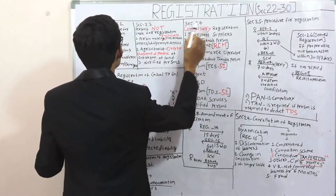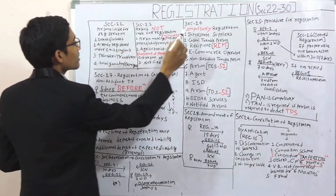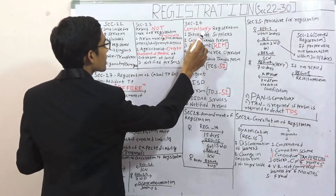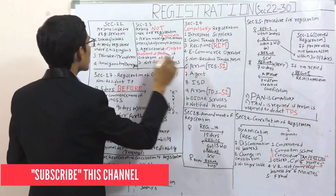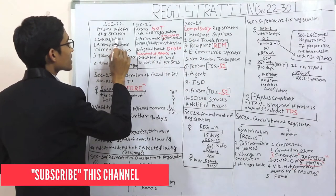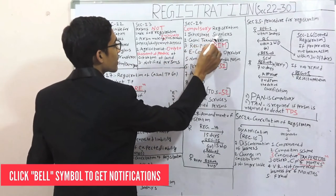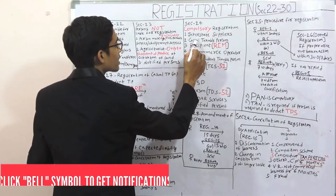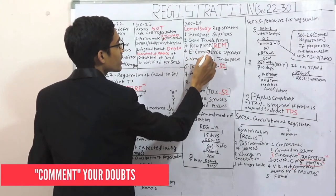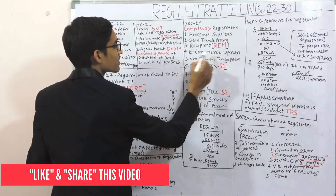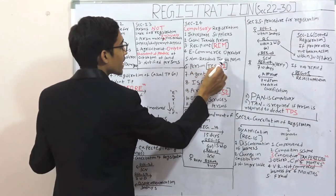Section number 24 — compulsory registration. Section 22 covers persons liable for registration, while section 24 covers persons who must register irrespective of the 20 lakhs or 10 lakhs threshold. One: interstate supplies. Two: casual taxable person. Three: recipient liable to pay tax under reverse charge mechanism. Four: e-commerce operator. Five: non-resident taxable person.